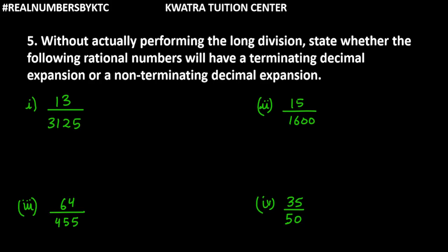Let's start with the first part. We have 13 over 3125. When you factorize 3125, you will get 5 raised to power 5. We know that our number is terminating when the denominator is of the form 2 raised to power m and 5 raised to power n.